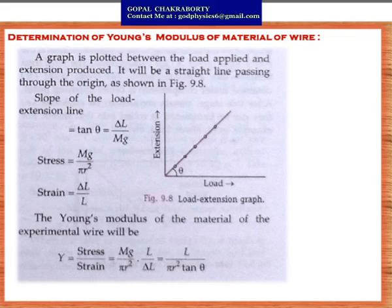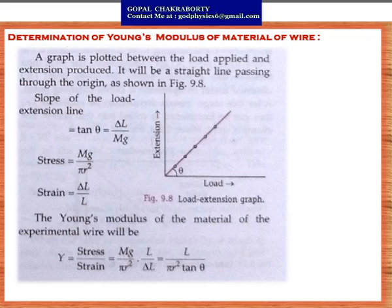A graph is then plotted between the load applied and the extension produced — it is a straight line passing through the origin. The slope of the load-extension line is tan θ = ΔL / mg. Stress equals mg / πr², and strain equals ΔL / L. Therefore, Young's modulus Y = stress / strain = (mg / πr²) / (ΔL / L), which rearranges to Y = mgL / (πr² ΔL) = L / (πr² tan θ). By this expression you can easily find Young's modulus of the material of an unknown wire.